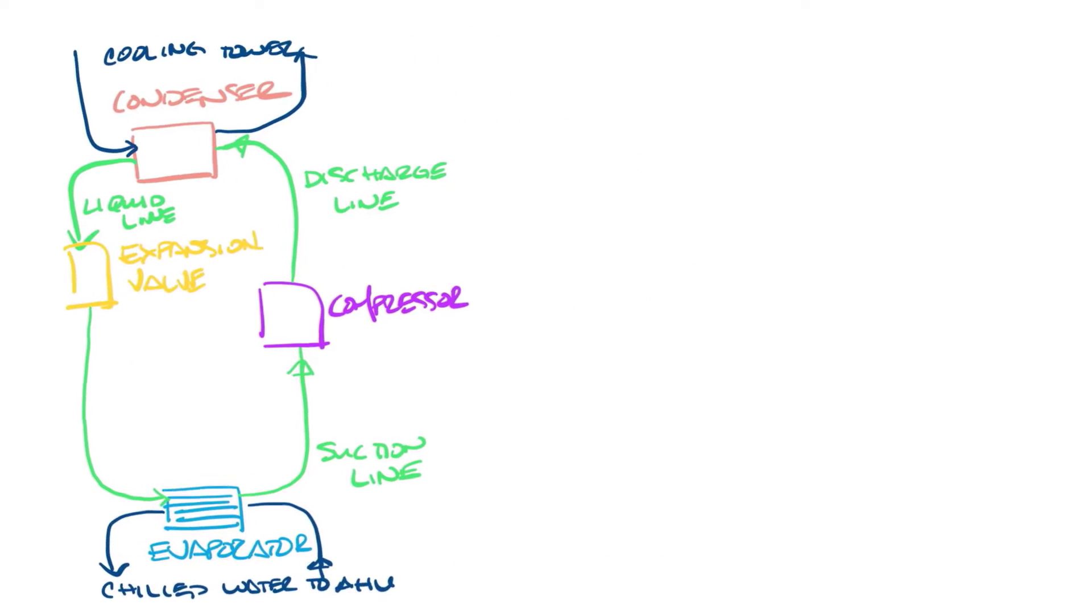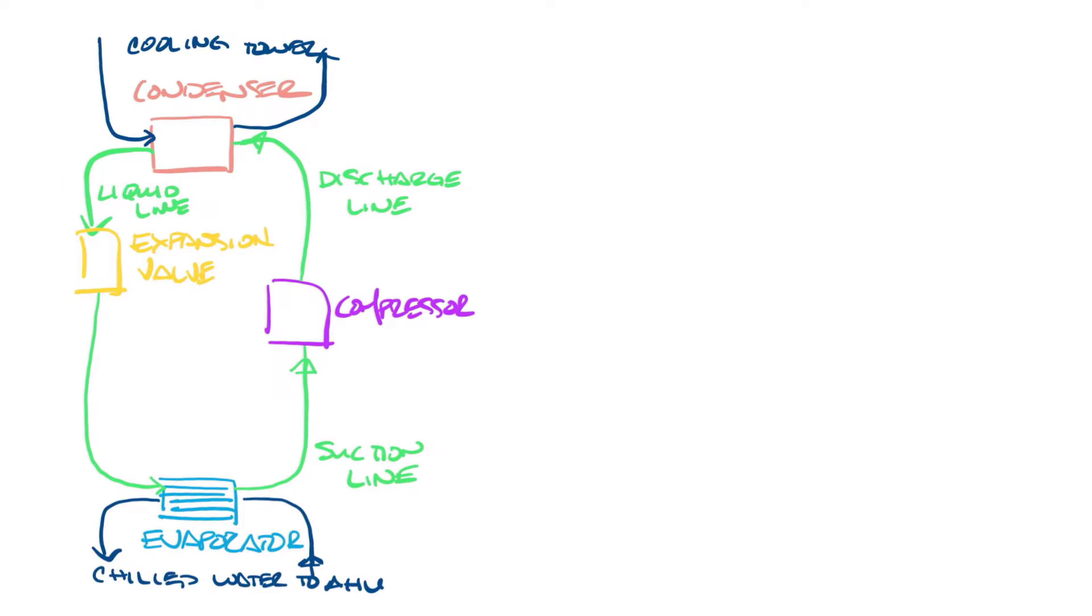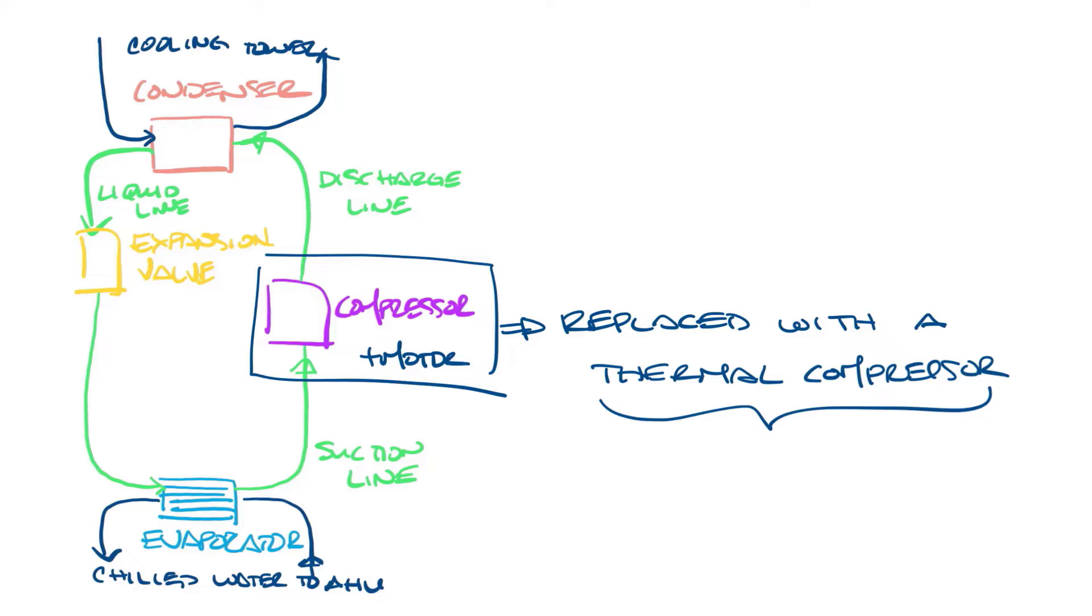Now let's bring up part of the picture from a couple videos back that shows the basic chiller components. In an absorption chiller, the compressor and its prime mover, the motor, are replaced by a thermal compressor system consisting of an absorber, a pump, and a generator.